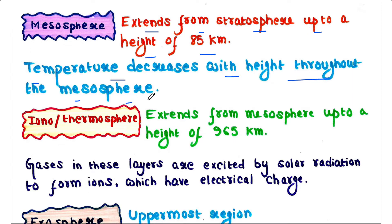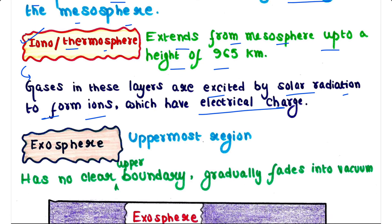Next is ionosphere, or we can say thermosphere. This layer extends from the mesosphere up to a height of 965 kilometers. The name ionosphere comes from the fact that gases in these layers are excited by the solar radiation to form ions which have an electrical charge, hence this layer is called ionosphere.